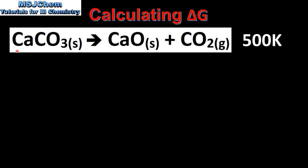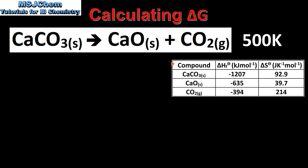Next we're going to calculate the change in Gibbs free energy for this reaction where calcium carbonate decomposes into calcium oxide and carbon dioxide, and we will see if it's spontaneous at a temperature of 500 Kelvin. In this table we have all the data we need, including the standard enthalpy change of formation values and the absolute entropy values.